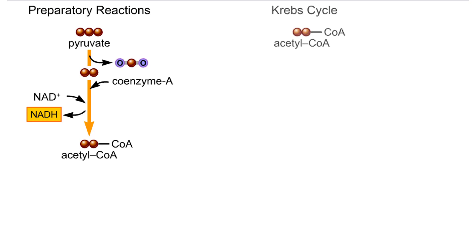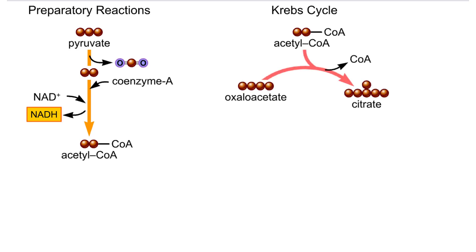The acetyl-CoA will enter the Krebs cycle. In the first steps of the cycle, acetyl-CoA transfers two carbons to oxaloacetate to form citrate.